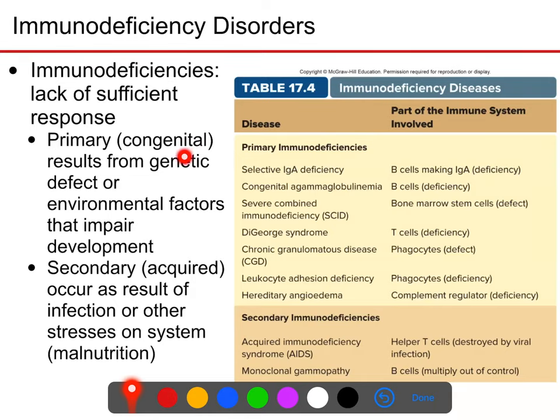Immunodeficiencies can be either primary or secondary. Primary means congenital, which means you're born with it. Most of the time, if you are born with a primary immunodeficiency, the source is a genetic mutation. It could also conceivably result from a non-genetic birth defect — something that happened early in development, possibly due to an environmental toxin or disease that the pregnant mother had while the fetus was developing — but most frequently it is a genetic source.